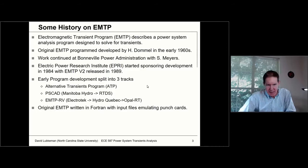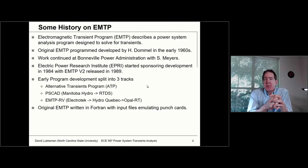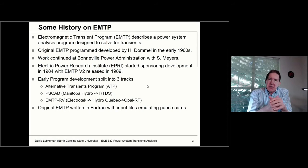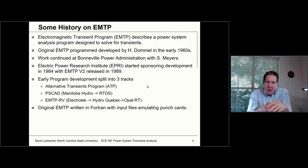Some history behind the EMTP program: EMTP is short for Electromagnetic Transient Program. That actually used to be the name of the program. Now there are so many variations on this — programs like ETAP have this now with names using letters like EMT. This was actually originally developed by a faculty member, Herman Dommel, in the early 60s. This is really back in the early days of computers where these computers were programmed in Fortran and we had a lot of limitations as far as memory.